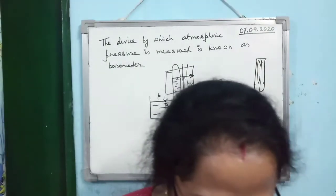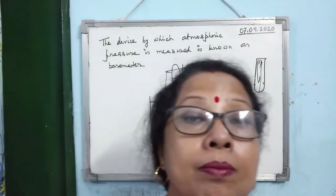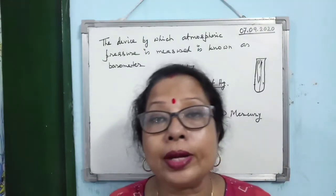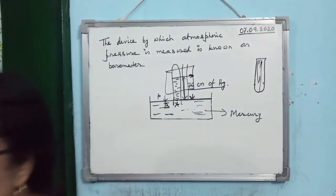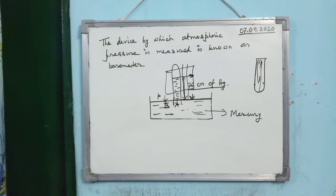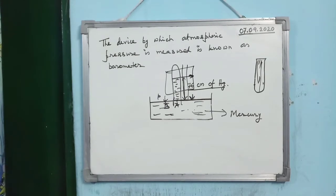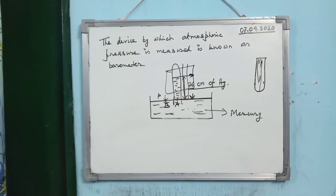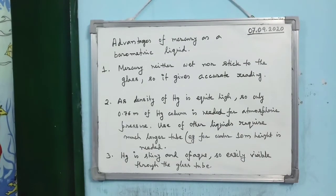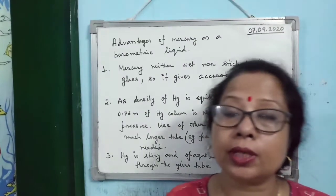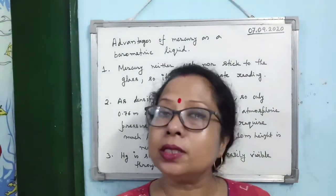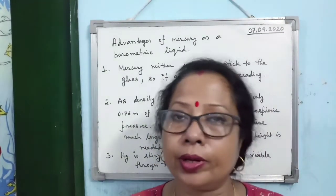Why do we use mercury as a barometric liquid instead of water? The first advantage is that mercury neither wets nor sticks to the glass tube, so it always gives accurate readings. Secondly, mercury has a very high density, so only a 0.76 m column is needed to represent atmospheric pressure — a 1 m tube is sufficient.